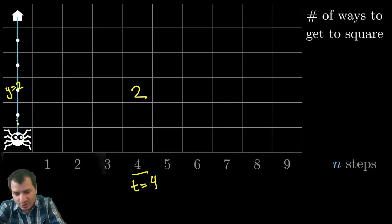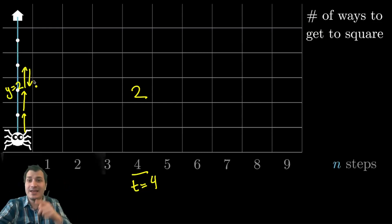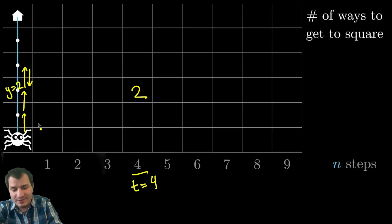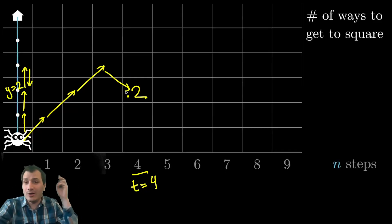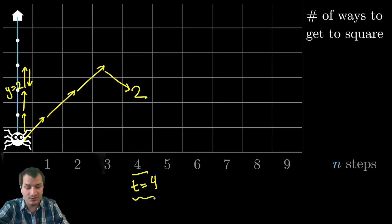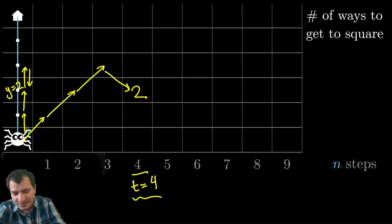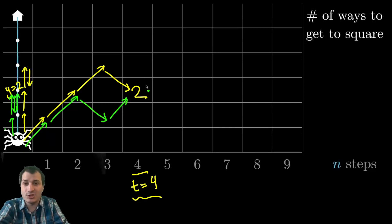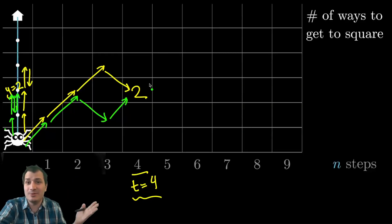At time t equals four, Mr. Spider can have two different ways to get to the position y equals two. He could either go up, up, up, down — that's one way — or up, up, down, up — that's the other way. Those are the two different ways he can get to this position, which is why we draw a two in that spot. Filling in this grid is going to let us see the Fibonacci numbers and where they come from. Importantly, this is the number of ways to get to a given square without going home first — once Mr. Spider goes back to his house, he stops his walk.